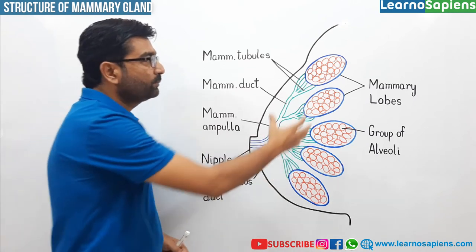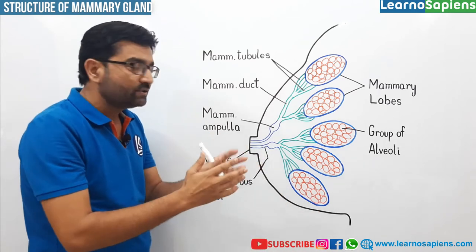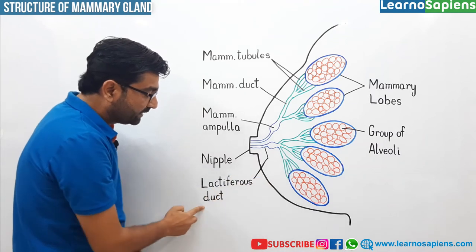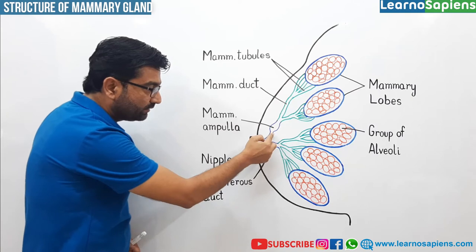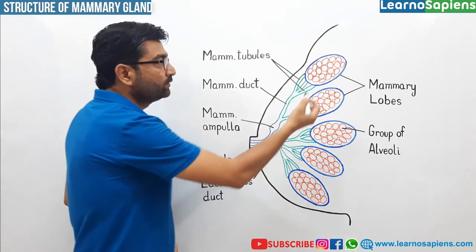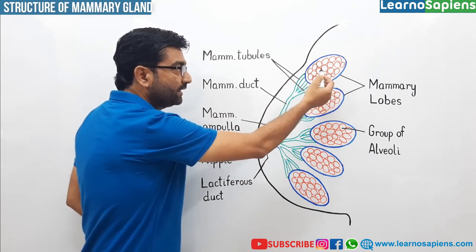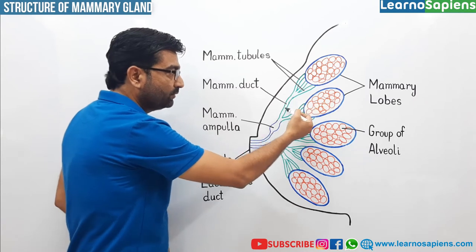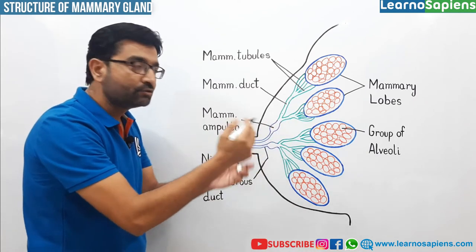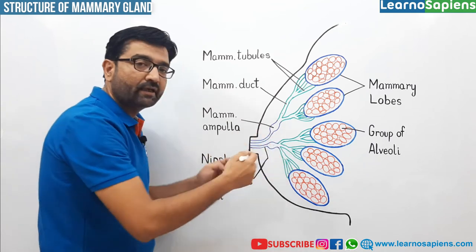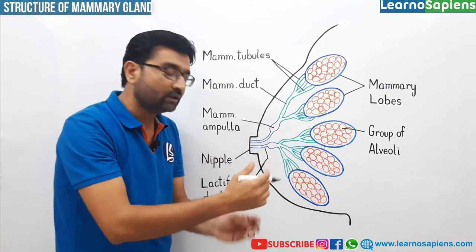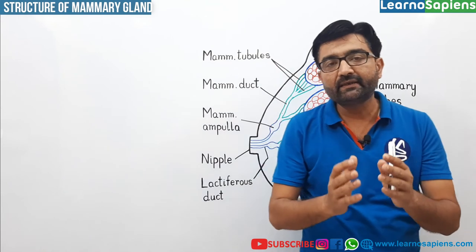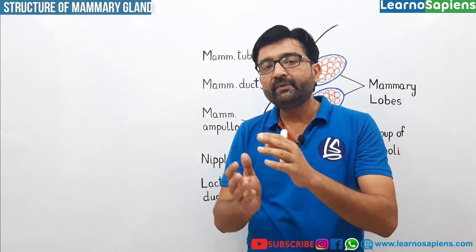And these memory ampulla — kaafi sari memory ampulla hoongi, kyunki 15 to 20 memory lobes hoti hai, toh usi hysaab se kaafi sari memory ampulla bhi hoongi. Toh yee sari memory ampulla aage continue karti hai in the form of lactiferous duct. Memory ampulla ke baad jo aage duct dikh raha hai — yee kehlati hai lactiferous duct. Toh eek baar phir se dekh lete hai: memory lobes → group of alveoli → memory tubules → memory duct → memory ampulla → lactiferous duct, to open through the nipple.